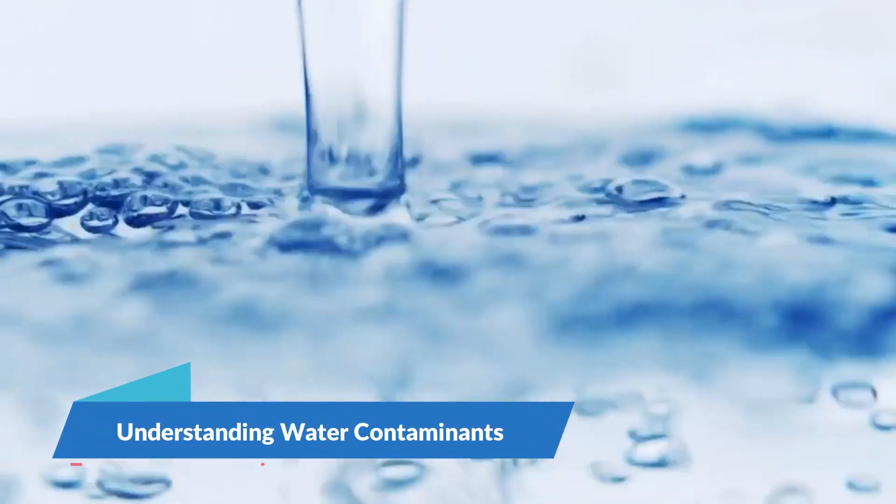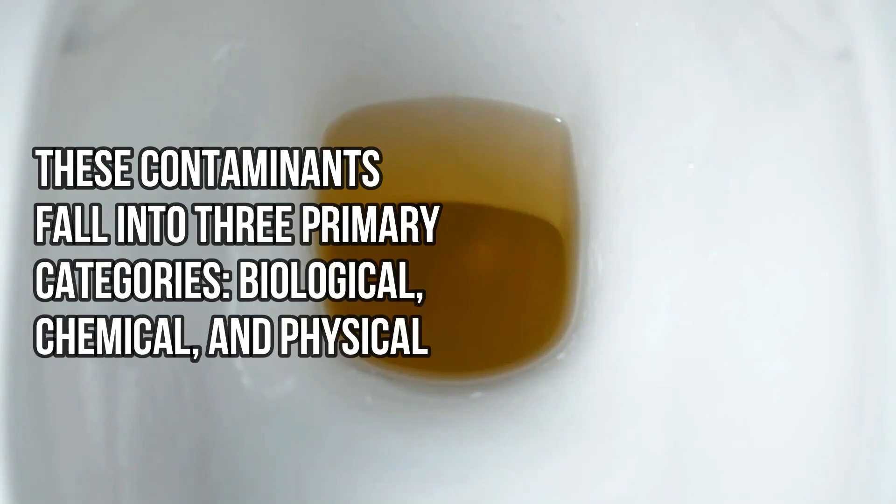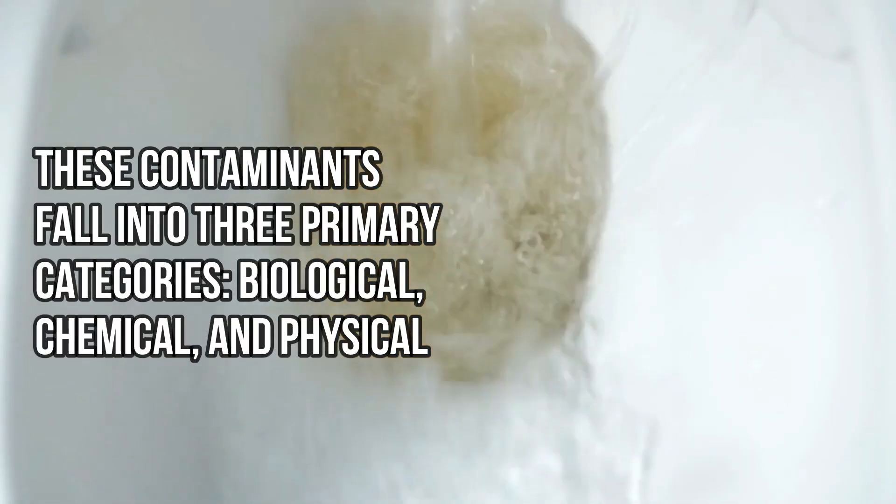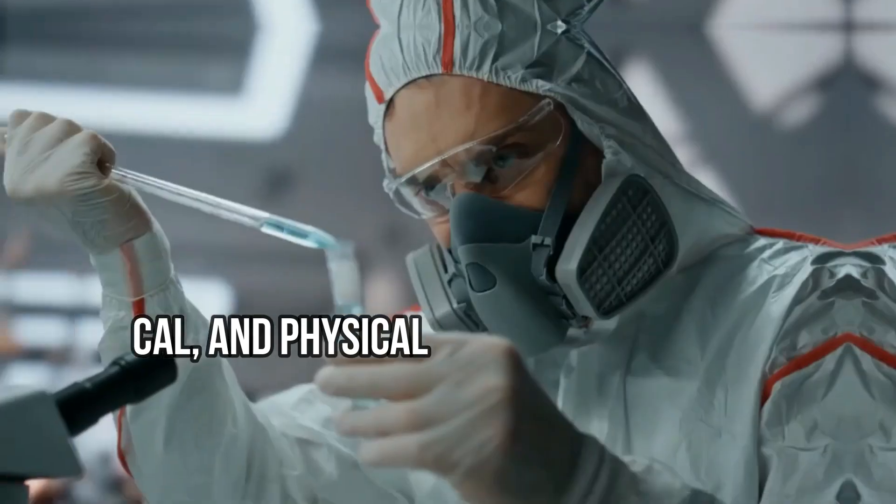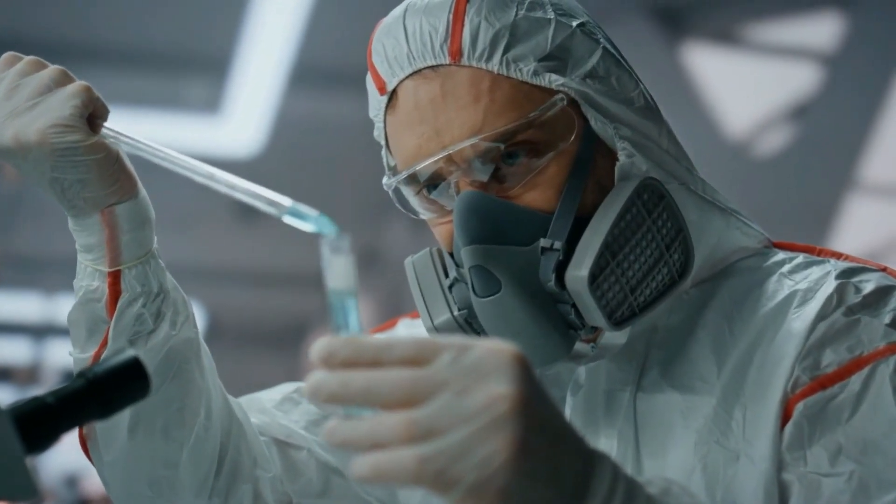Understanding water contaminants. When it comes to water purification, the first step is to understand the various types of contaminants that can make water unsafe for consumption. These contaminants fall into three primary categories: biological, chemical, and physical. Each type poses different risks and requires specific strategies for removal or neutralization.